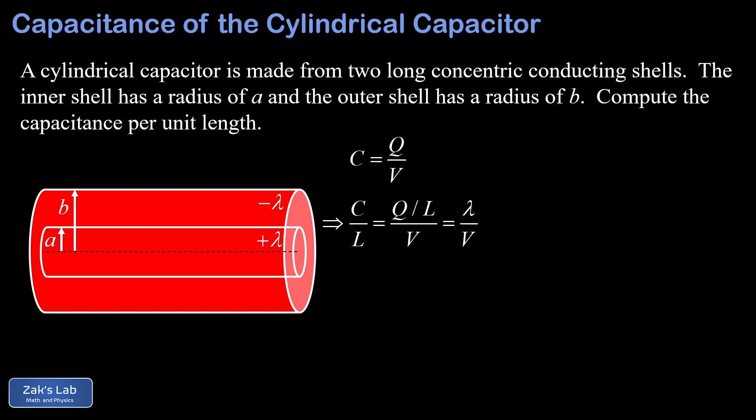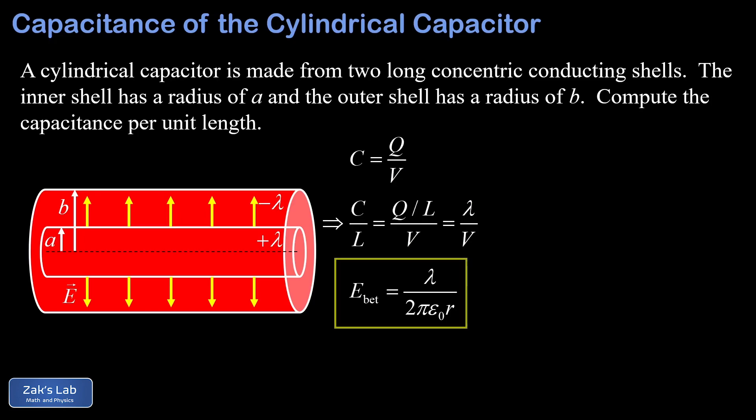To get the potential difference between the two conductors we need to know the electric field between them. In the previous video we computed that electric field using Gauss's law. As it turned out, the electric field between the two conductors was lambda — the linear charge density — divided by 2 pi epsilon-zero times r.